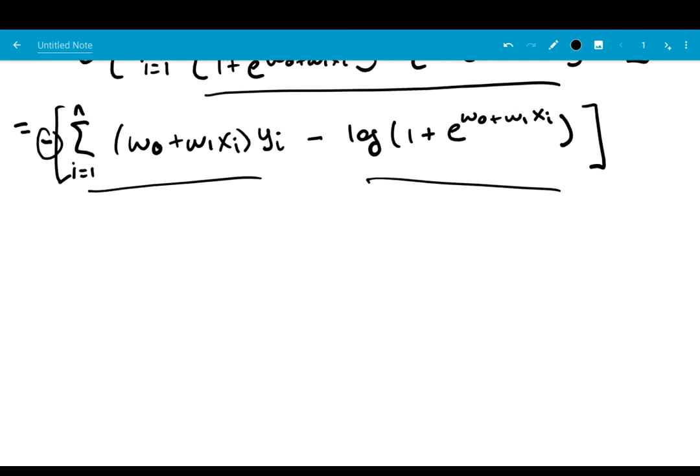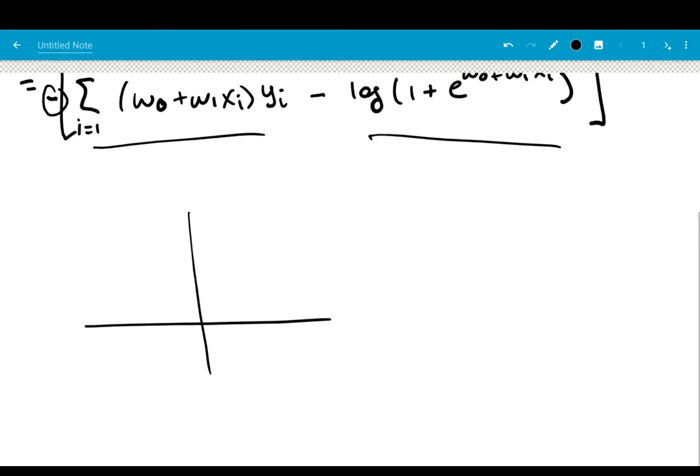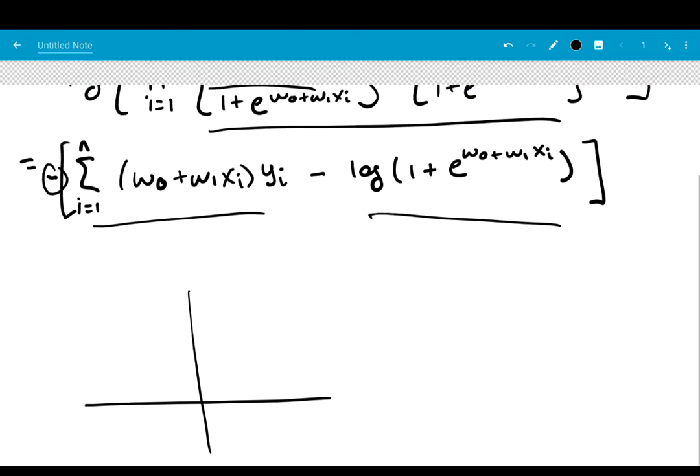We can change the activation functions, we can add lots of interior layers, and so on. So it needs a much more general algorithm than what is typically done in statistics for this specific problem. One example of what is done in neural networks is to use so-called gradient descent.